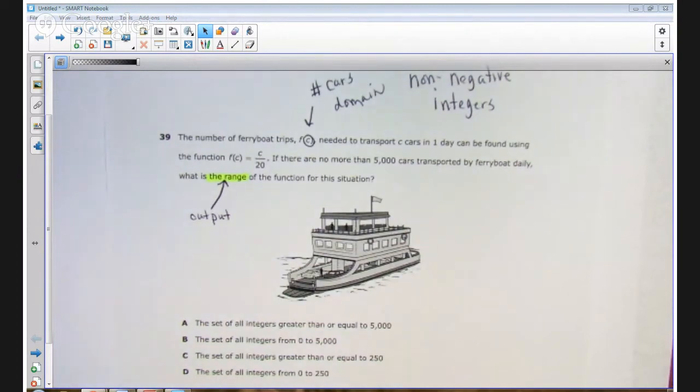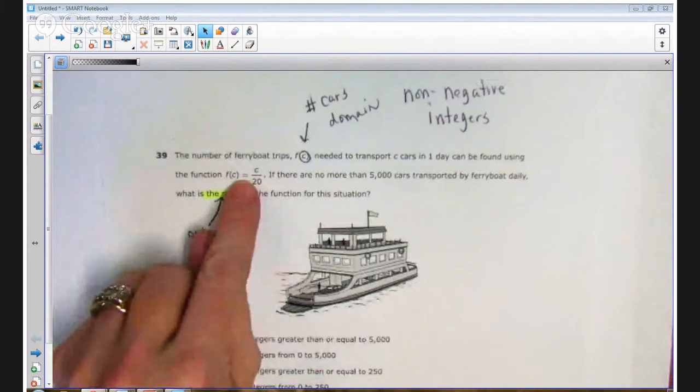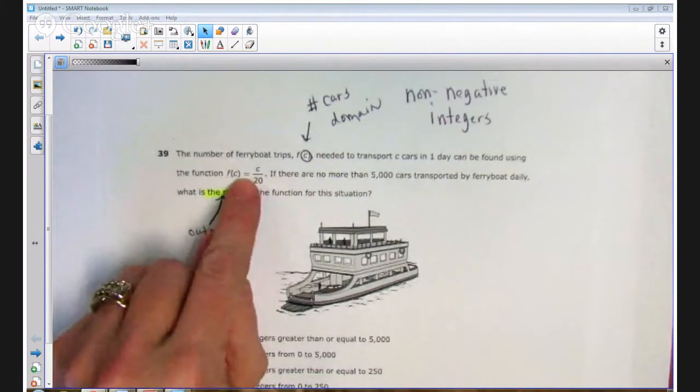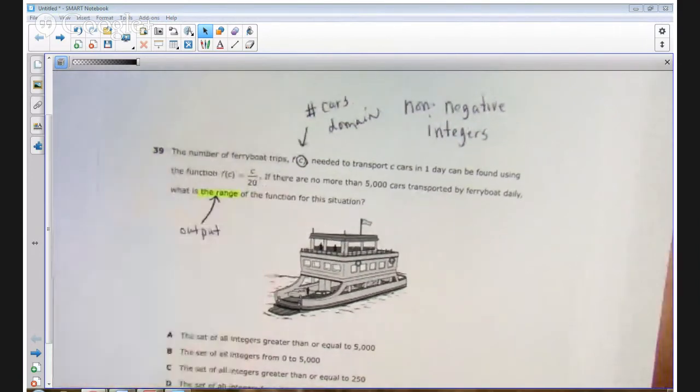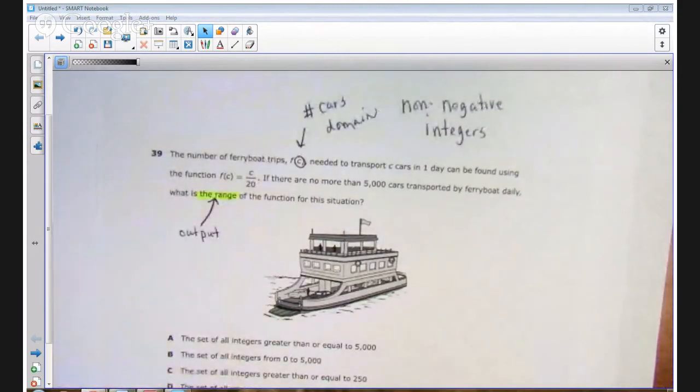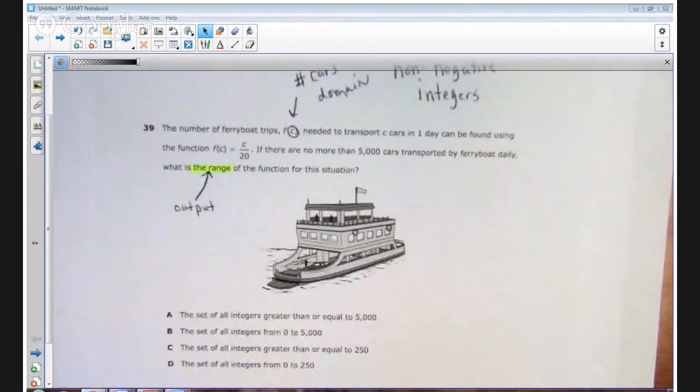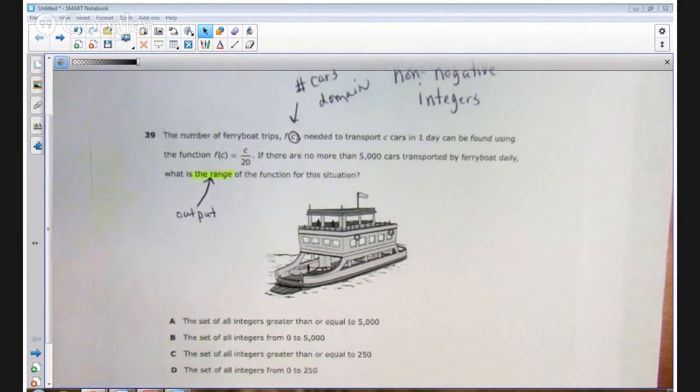Let's take a look at this function, F of C. There's a variety of ways to do this problem, but what I'm going to do is just reason through it because we can get the correct answer by grasping what this situation is talking about. If I know that the number of cars are going to be input into this function, then I already know that the lowest possible number of cars is zero. There can't be negative numbers of cars, and there could be zero cars transported, theoretically. I don't know if that's really practical, but in mathematics, it's possible to have zero cars in this situation.